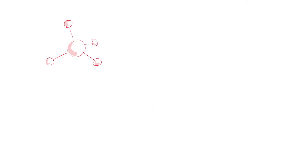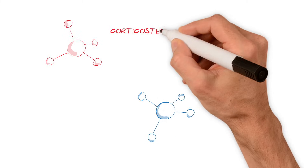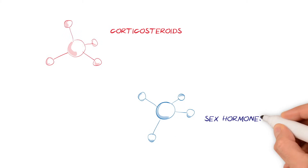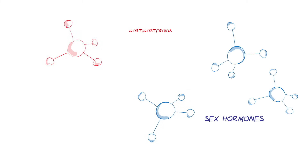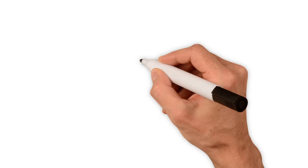The symptoms of CAH are the result of having too little of the corticosteroids and too much of the sex hormones. There are different types of CAH depending on the gene affected, and the severity of CAH varies a lot.